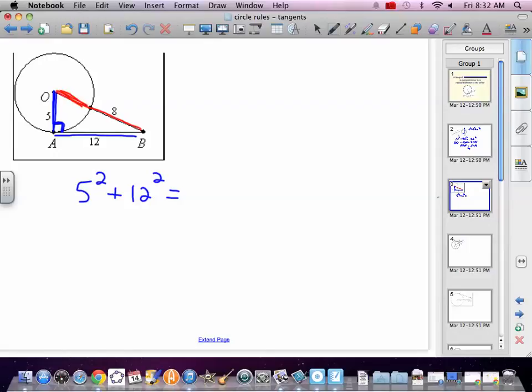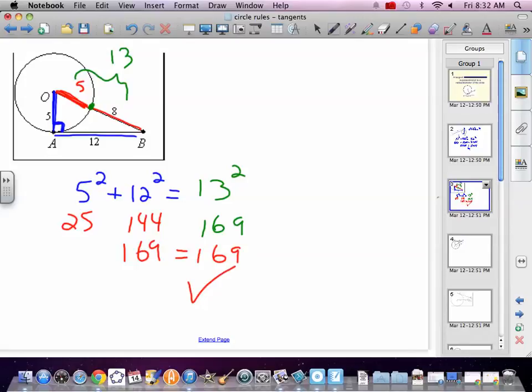You've also got to see that it's 8 and 5. 8 is only going up to that point. So, this side is actually 13. So, 13 squared is 169. This is 144. This is 25. 169. Yes, it works. So, that is a tangent because Pythagorean theorem is working.